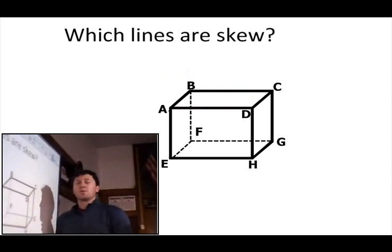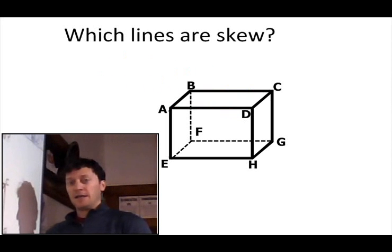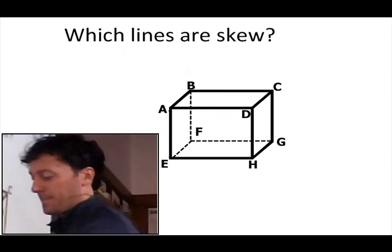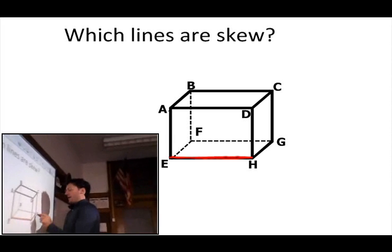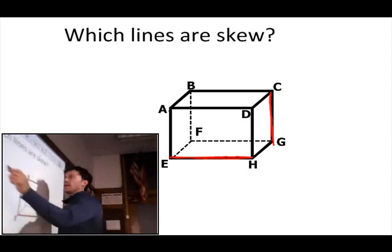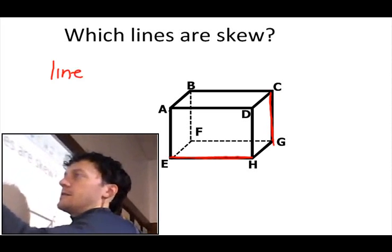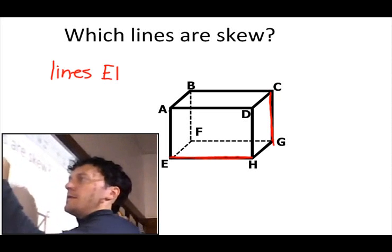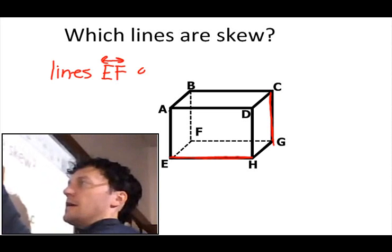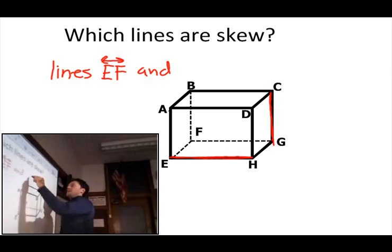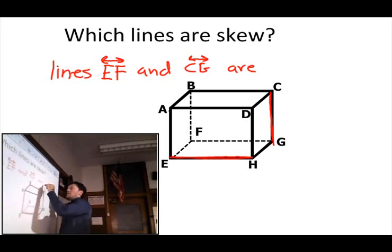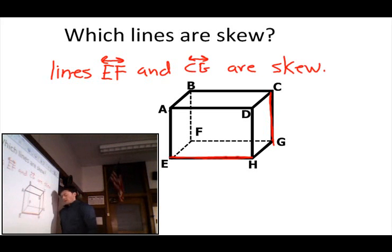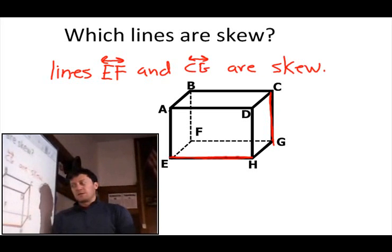Which lines are skew? They need to be in different planes and not intersecting. For example, lines EF and CG are skew. There are other examples you could come up with as well.